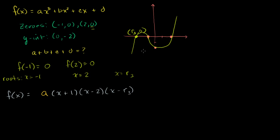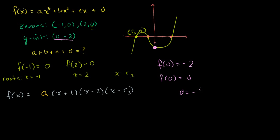The other big clue they gave us is the y-intercept — the point (0, -2). They're telling us that f(0) = -2. What's f(0)? If you put 0 in, the x terms all become 0, and you're just left with d. So f(0) = d. That means d must be equal to -2. So we've solved at least one of the coefficients — the constant term d equals -2.